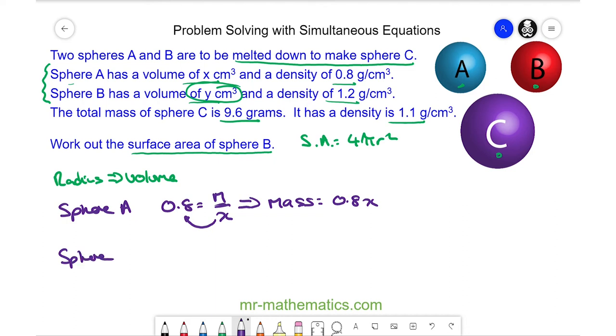For sphere B, we can use the same idea. The density is 1.2.